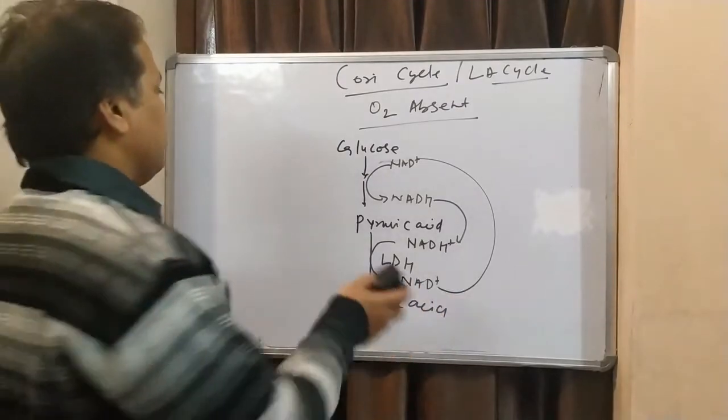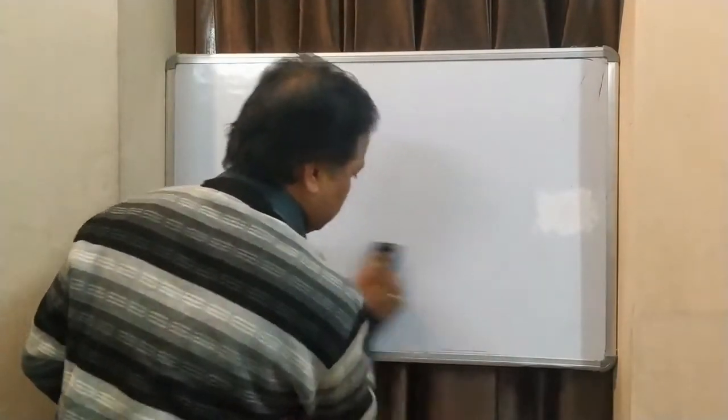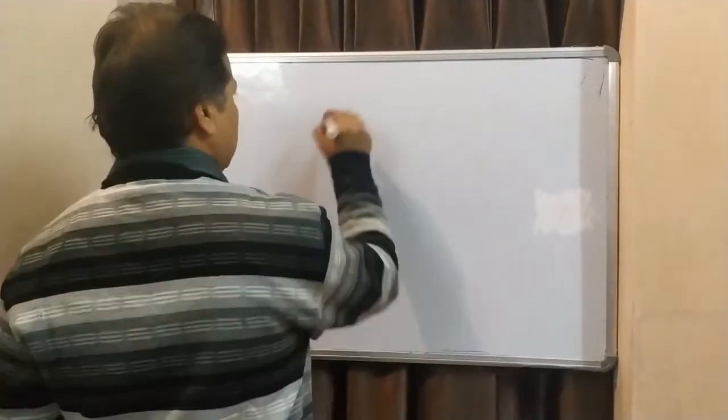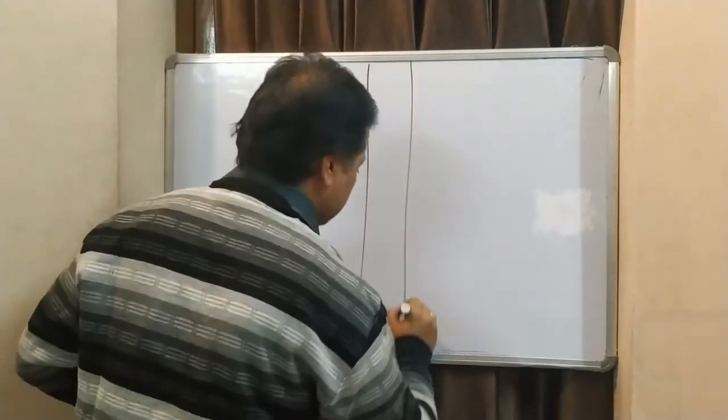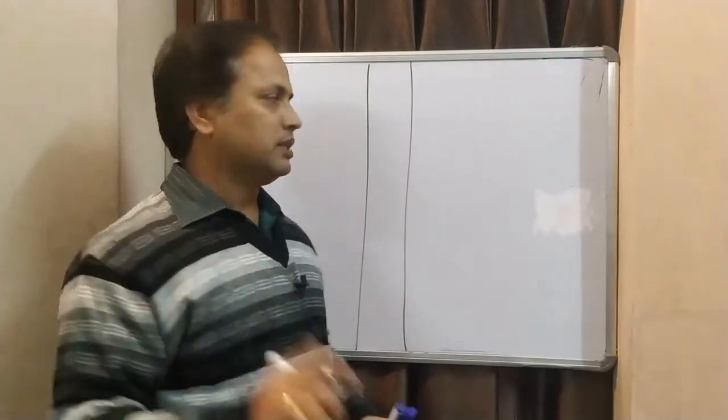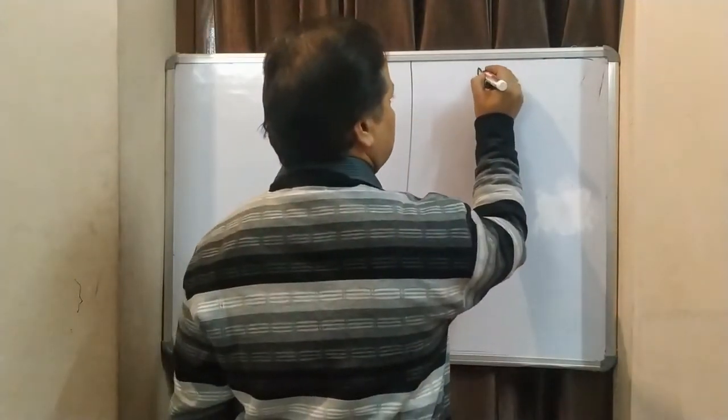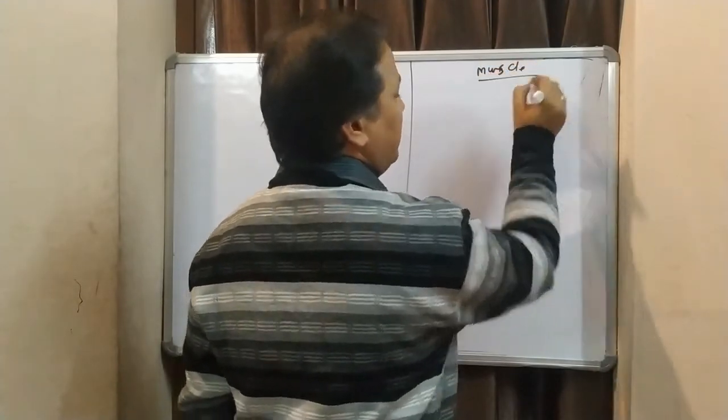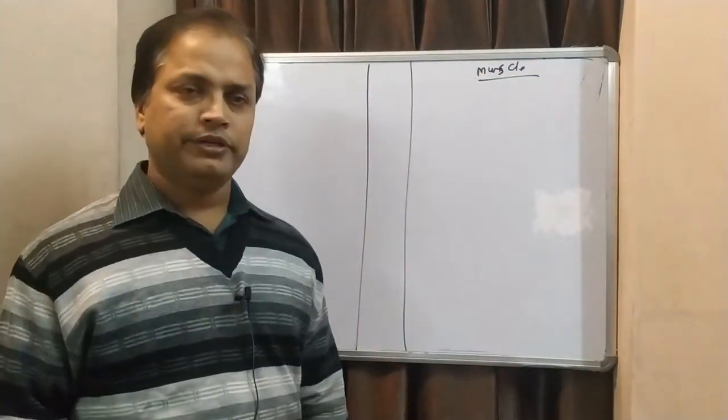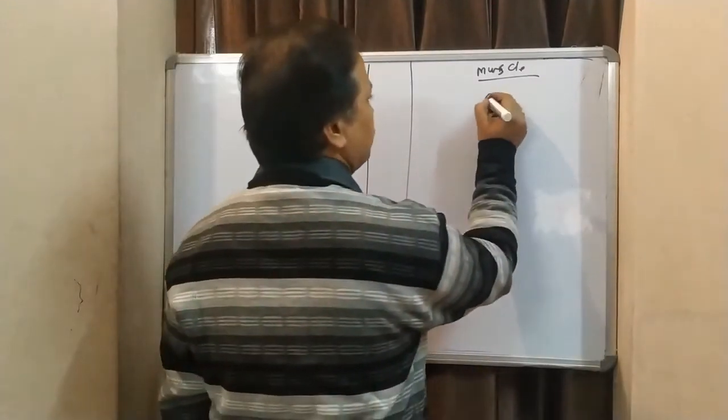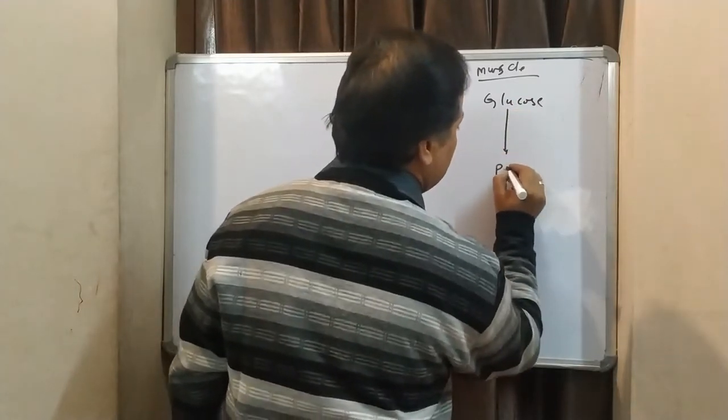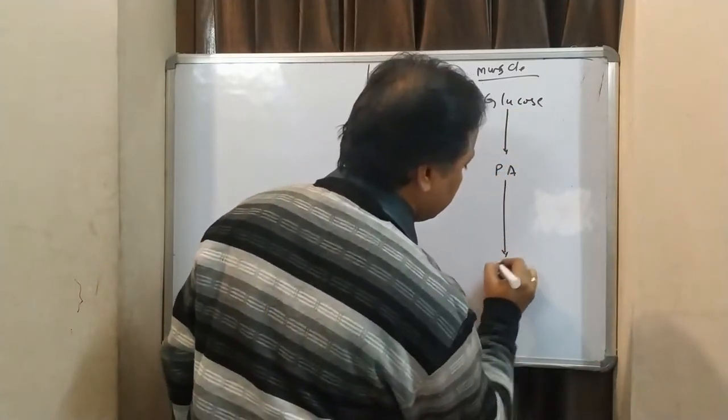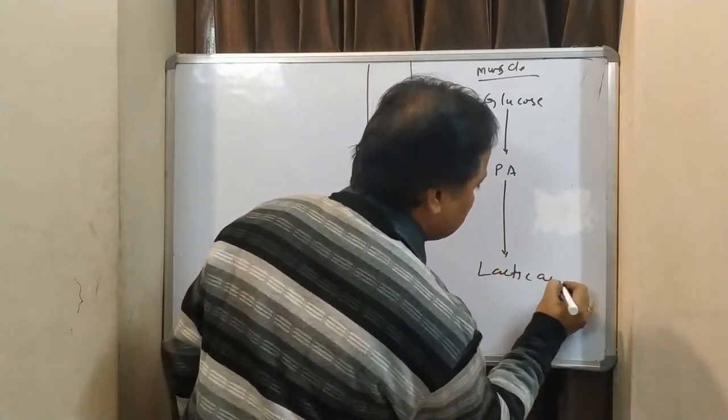Now, what is Cori cycle? Mainly, we are talking about anaerobic respiration. We are talking about muscles. In our muscle, we had glucose, glucose converted into pyruvic acid, pyruvic acid converted into lactic acid.